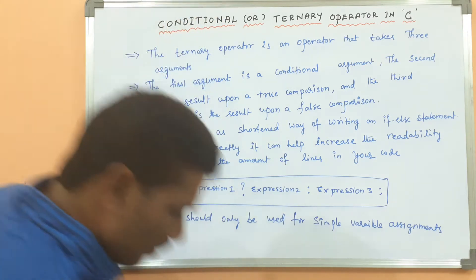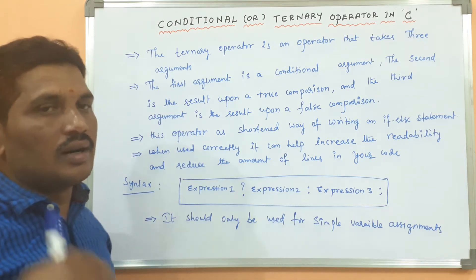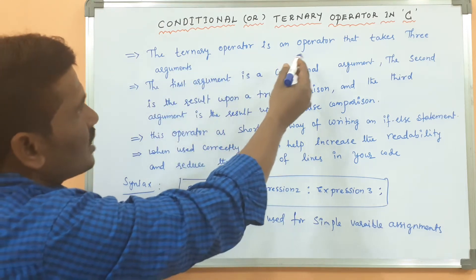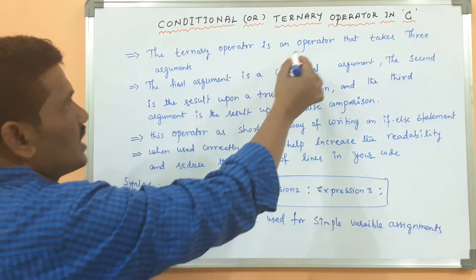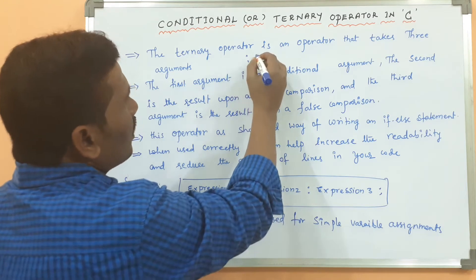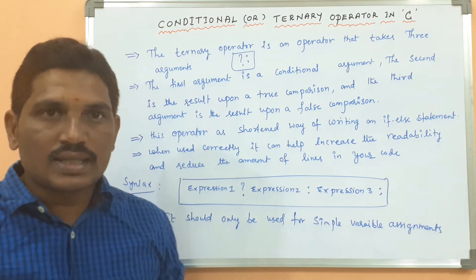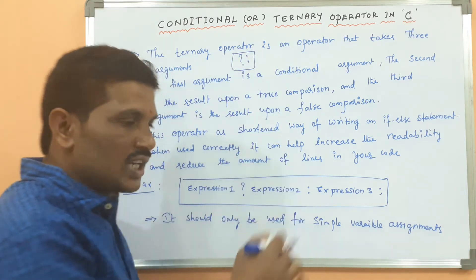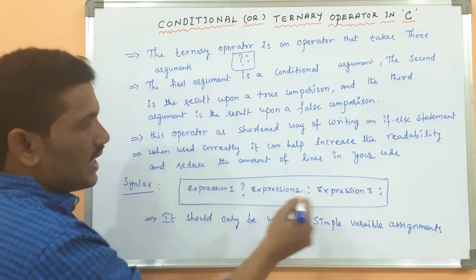The ternary operator is called ternary because it requires three operands or three expressions. Sometimes I call it a conditional operator and sometimes a ternary operator — please don't confuse. It is a combination of two operators: the question mark and the colon.